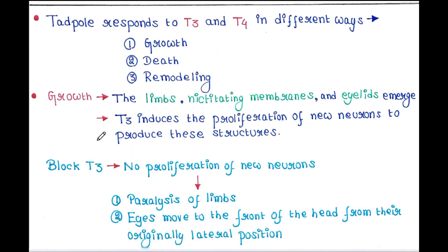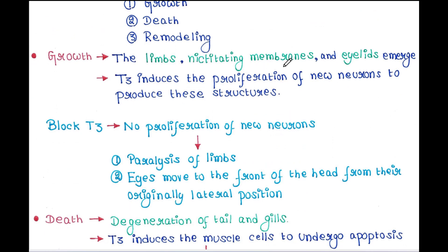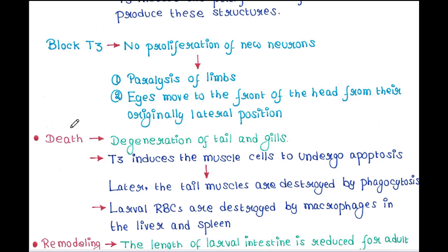First is growth. The limbs, nictitating membranes, and eyelids emerge. T3 hormone induces the proliferation of new neurons to produce these structures. If you block T3 hormone, there will be no proliferation of new neurons, which leads to paralysis of limbs, and eyes will move to the front of the head from their original lateral position.